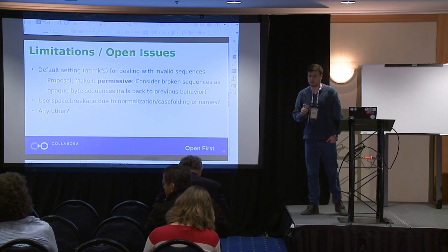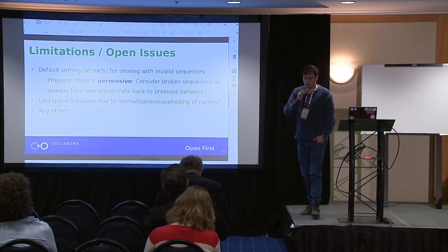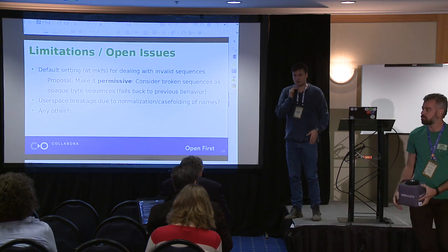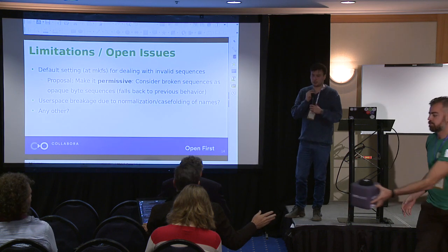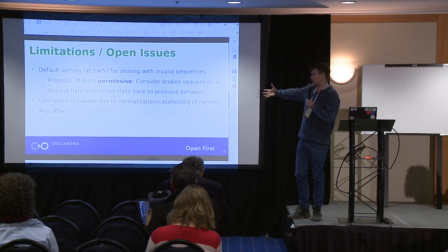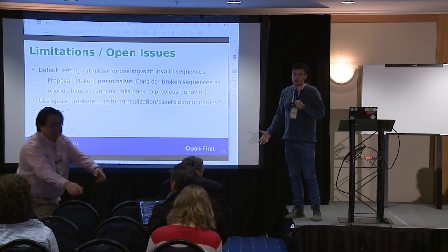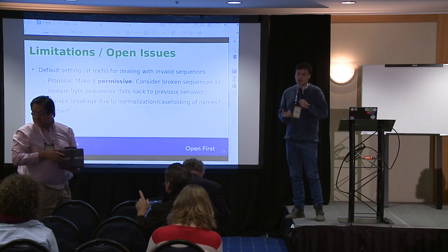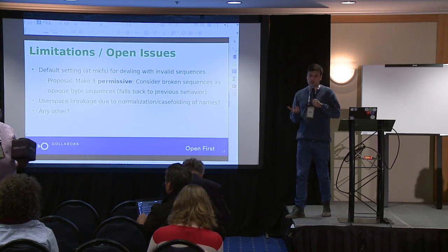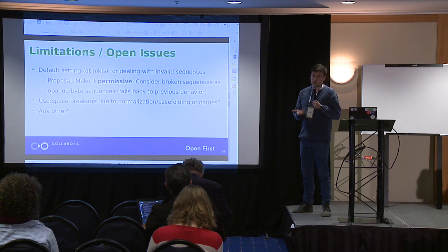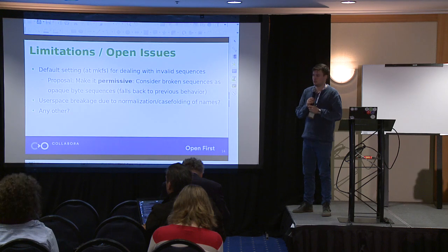The current implementation is ext4, but the main part of it is the NLS changes. I believe one contribution of this work is that we are given a roadmap to be implemented on other file systems. The first thing I think we could do is extend the XFS support to make it per-directory and eventually support other encodings.